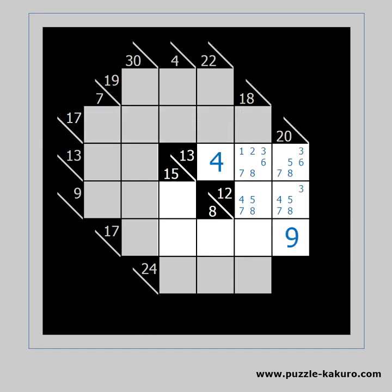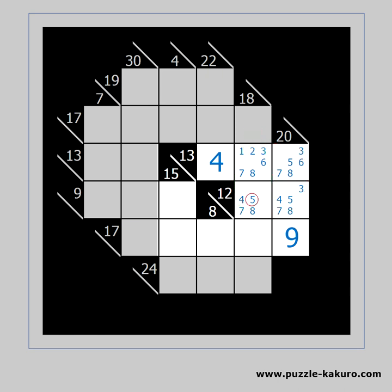The next technique is called sub-blocks. This technique may save you if you hit a dead end. The sum of these 2 cells is 11 because we already have a 9 in the vertical 20. The sum of these 4 cells is 21 because of the horizontal clues — 12 plus 13 is 25, minus 4 makes 21. This means that the sum of these 2 cells is 10. We can remove the 5 as a candidate. Sometimes this is all you need to crack the entire puzzle.